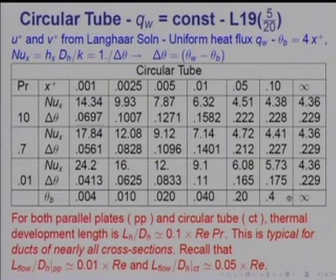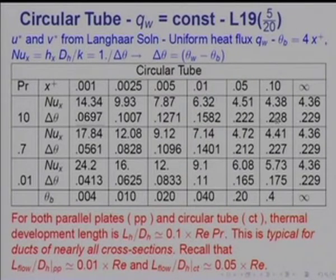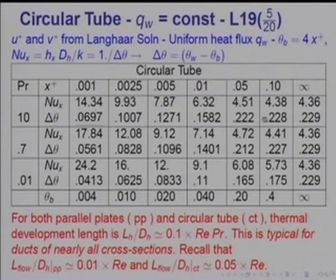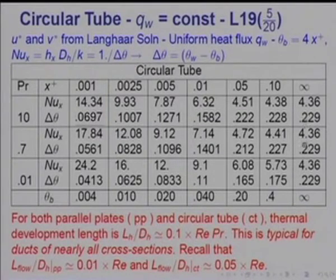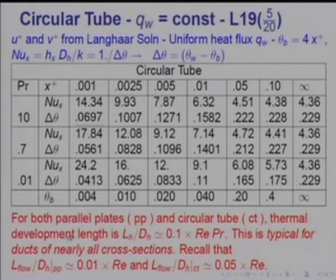The wall temperatures start at 0.0697 for Prandtl number 10, and then the temperature difference increases but becomes progressively constant, which results in a constant Nusselt number for all Prandtl numbers. In the fully developed state the Nusselt number is constant at 4.36. So for both parallel plates and circular tubes, the thermal development length L_h/d_h is approximately equal to 0.1 times Reynolds times Prandtl.